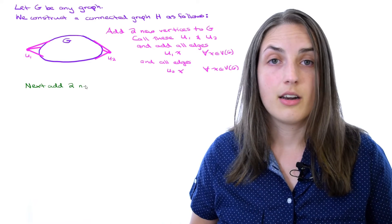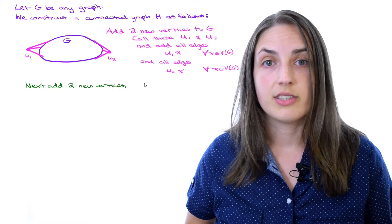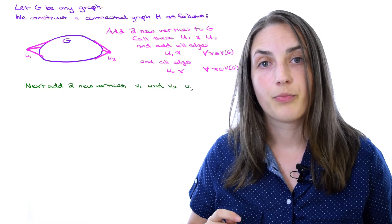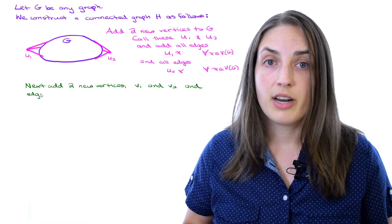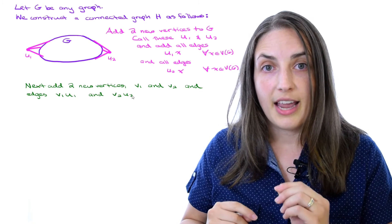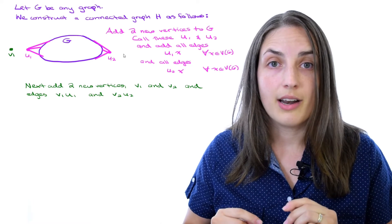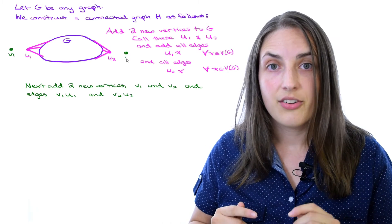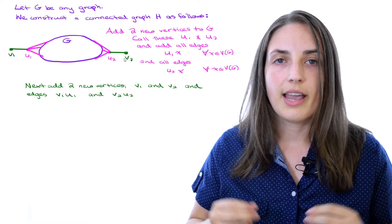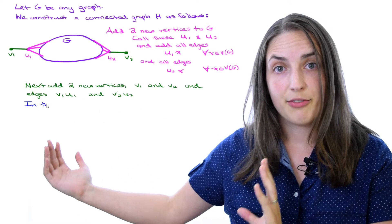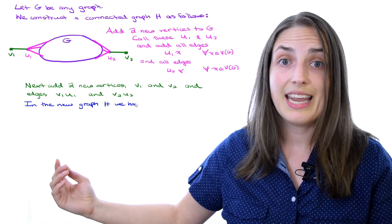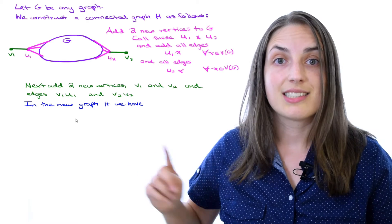We're not quite done. We want to add two more vertices, v1 and v2. All I'm going to do with v1 and v2 is add two more edges: the edge from v1 to u1 and the edge from v2 to u2. This big graph, let's call it H. This is the connected graph that we claim G is the center of.